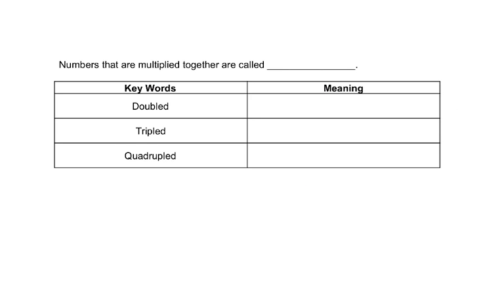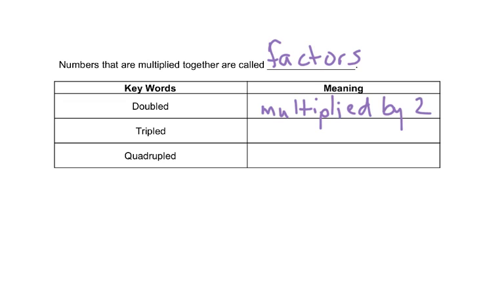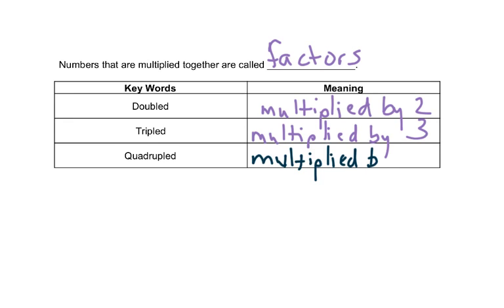Here are some special multiplication words. Numbers that are multiplied together are called factors. These factors multiply together to give you the product — the answer. When we say something is doubled, we mean it's being multiplied by 2. When it's tripled, we mean it's being multiplied by 3. And if it's being quadrupled, we mean multiplied by 4.